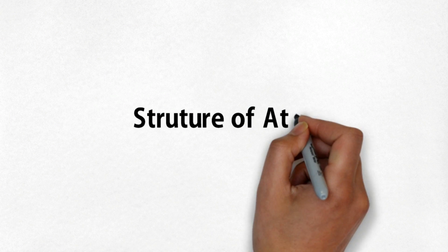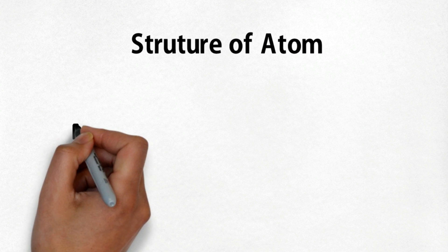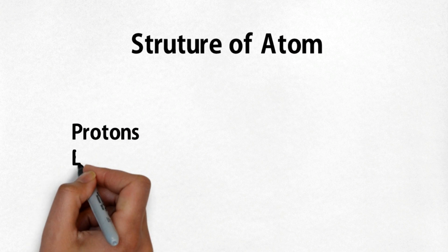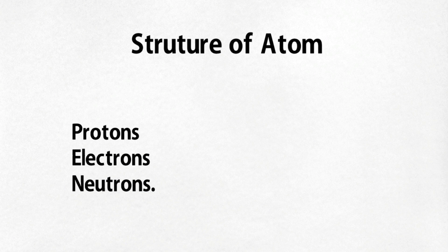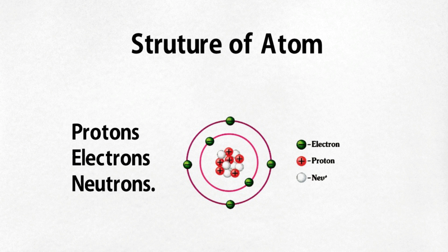Now let's know what atoms are made of. Atoms are composed of particles called protons, electrons, and neutrons. Protons carry a positive electrical charge, electrons carry a negative electrical charge, and neutrons carry no electrical charge at all.